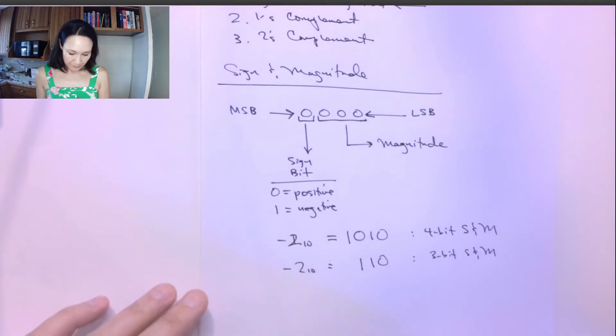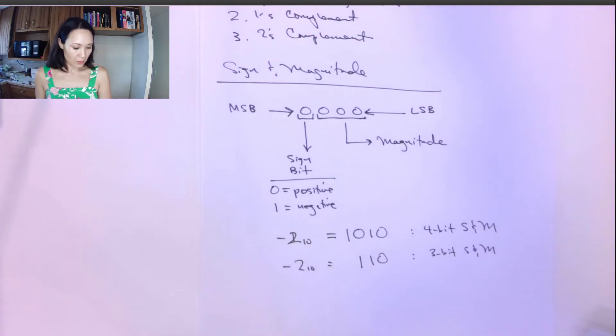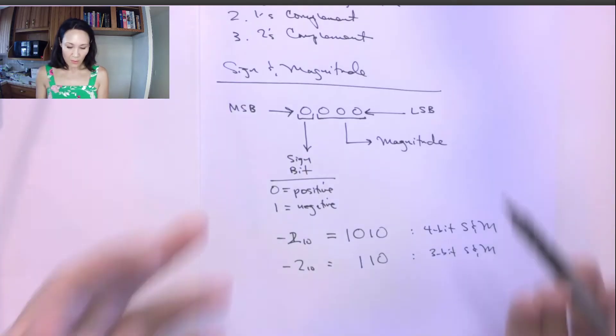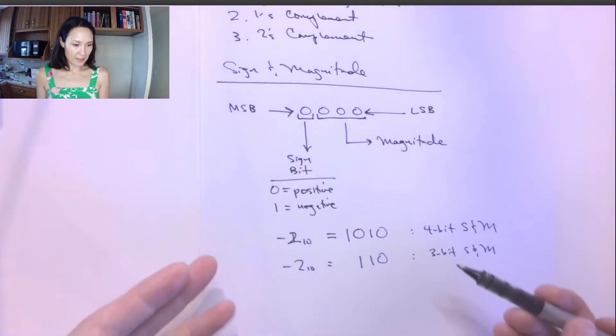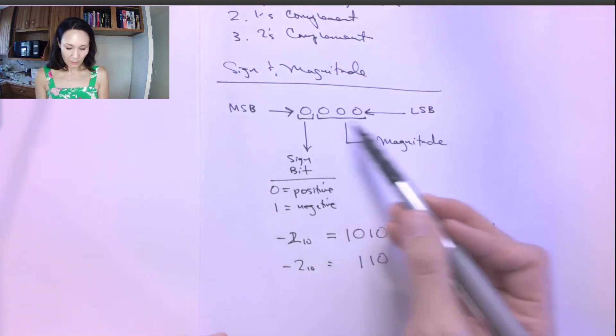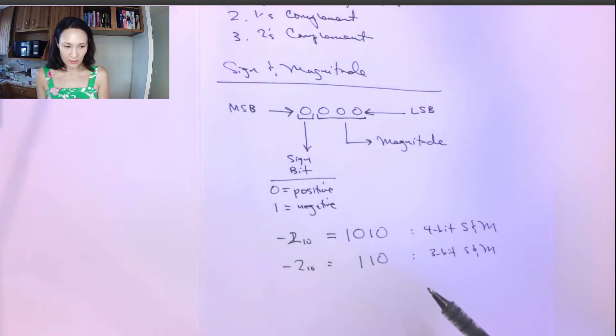Okay, so there is a drawback to the sign and magnitude convention for expressing negative numbers. Although it's simple to understand and it's simple to implement because there's no real changing or converting that we need to do.